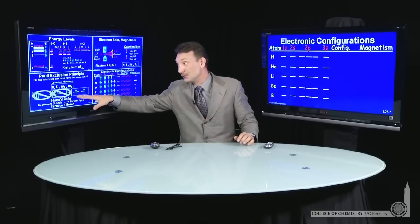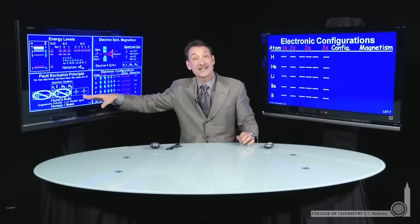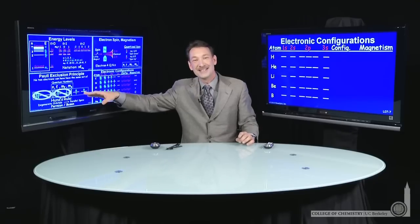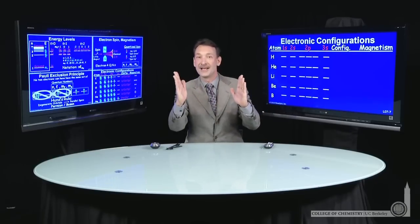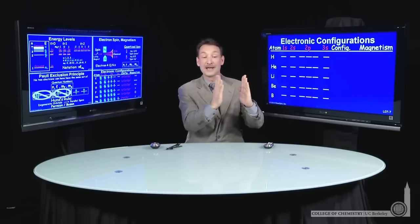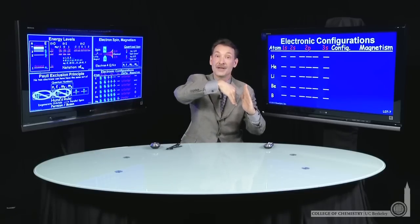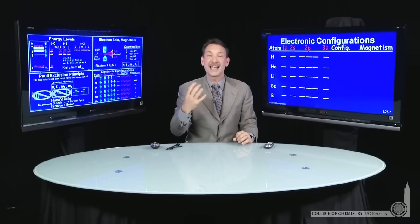Also, Hund's rule says electrons fill orbitals that are degenerate with maximum multiplicity. That means all the spins stay parallel until I have to pair up, so the magnetism adds. The little m sub s's add until you are forced to pair them up. So those two rules allow us to catalog the electrons as they fill elements on the periodic table.